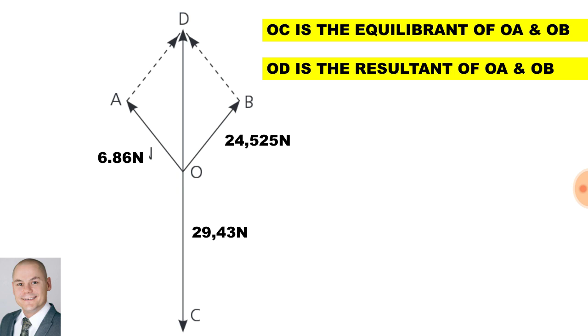OC is the equilibrium of OA and OB. However, OD is the resultant of OA and OB.